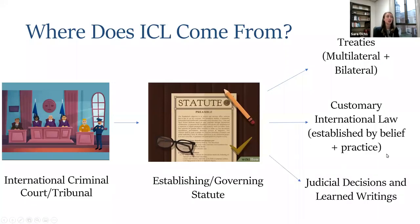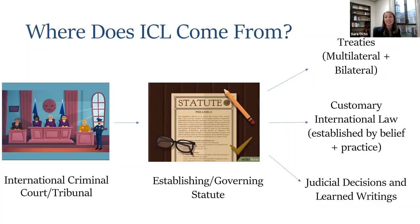The third source of ICL is judicial decisions and learned writings. This differs significantly from U.S. domestic law, where stare decisis requires a court to follow its own decisions and those of higher courts on similar issues. We don't have that in ICL — cases and opinions issued by other international criminal tribunals or courts are not binding on any specific international court. However, they are persuasive and can be used as a starting point for a court to render a decision. Learned writings — articles, essays, and papers by academics and international law experts — are also given considerable weight in judicial opinions.